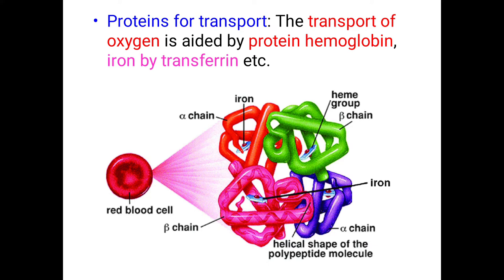The second major function is that proteins are used for transportation of biological molecules. Oxygen, an important respiratory gas required for biological oxidation of food, must be carried from the external environment to every cell. This oxygen transport is carried out by the protein hemoglobin, which is present within the red blood cells. Similarly, ferrous or iron ions are transported by transferrin proteins.